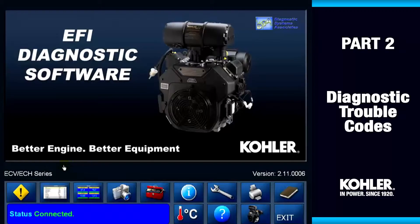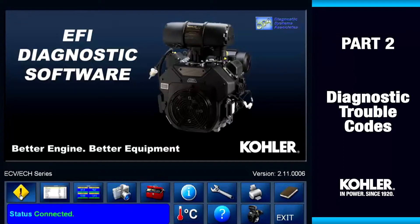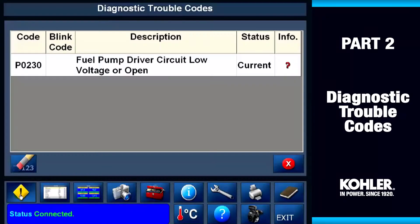Let's take a look at diagnostic trouble codes. Each button on the control panel has a special diagnostic or information capability. Let's look at the trouble code button — I call it the money button because it saves you a lot of time. You can check the user manual for trouble codes, but the button is much quicker.